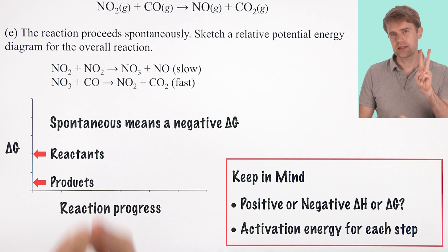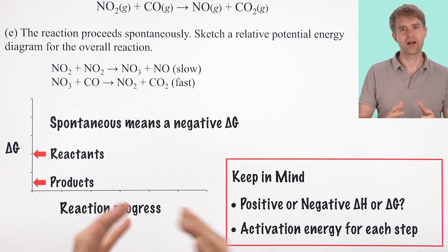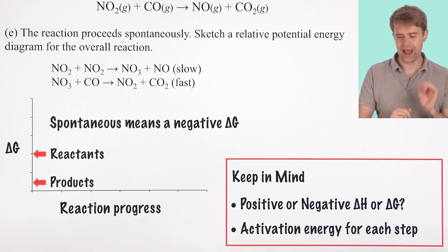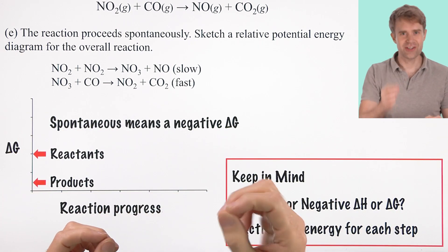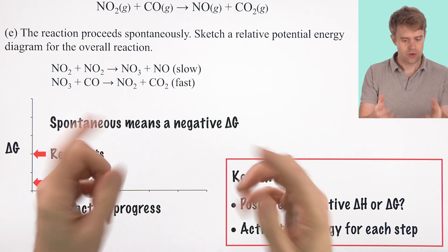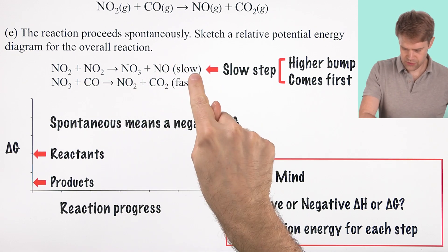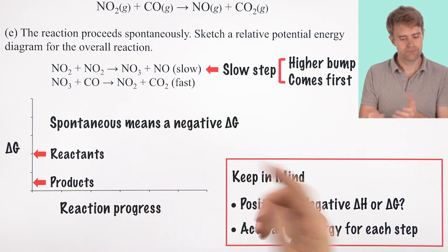Now, the second thing to keep in mind is activation energy. That's that peak of energy required to kick start the reaction. The trick here is to remember that each step, each step in the reaction gets its own activation energy bump. The slow step gets the higher bump. That's why it's slow, because it requires a higher activation energy. So we have the two humps for the slow and the fast. You have to be sure to put these in the correct order. So for our reaction, this is the slow step. The fast step, that should be the higher bump, and it should come first, followed by a lower bump for the fast step.